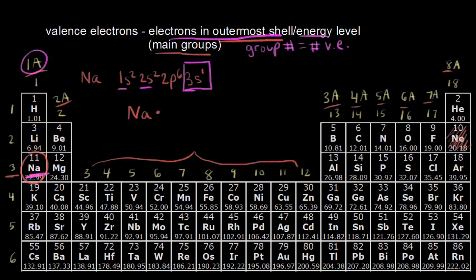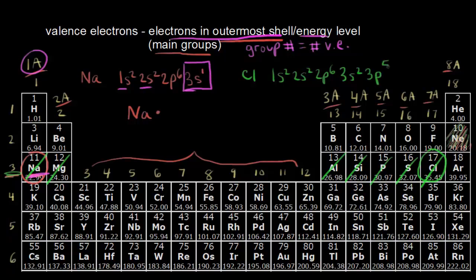Let's go ahead and write the electron configuration for chlorine. If I wanted to write the electron configuration for chlorine, it would be 1s2, 2s2, 2p6 — and once again that takes me all the way to neon. Now in the third energy level, I can see that I would fill 3s2. And that puts me into my p orbitals, which have five electrons. So the full electron configuration for chlorine is 1s2, 2s2, 2p6, 3s2, 3p5.